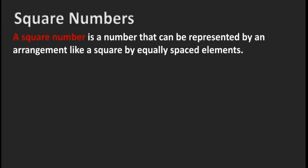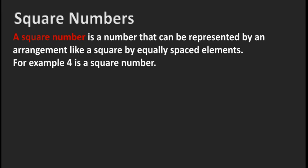A square number is a number that can be represented by an arrangement like a square by equally spaced elements. For example, 4 is a square number — we can arrange 4 elements in a square shape, so 4 is a square number.